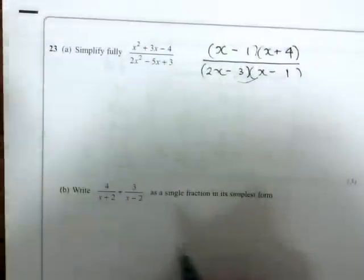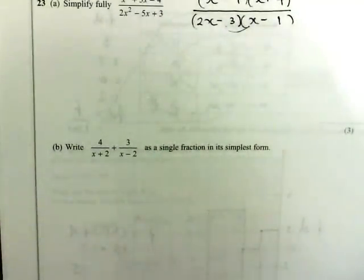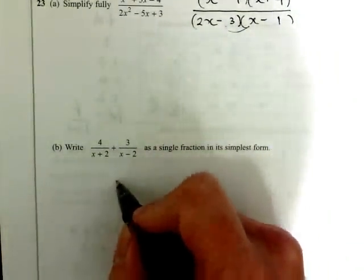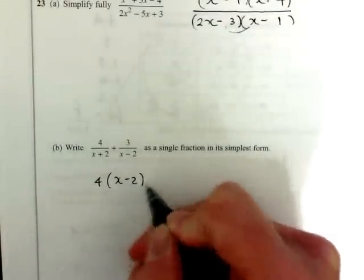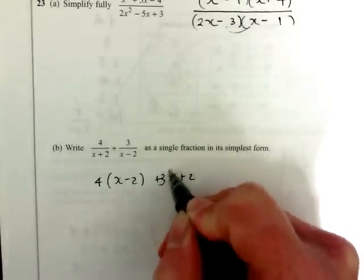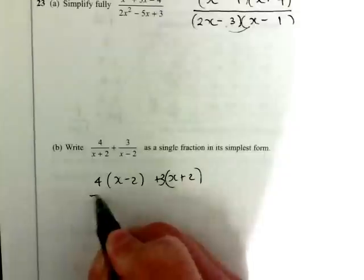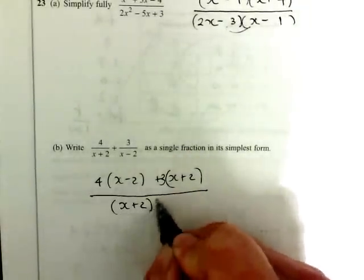So on to the second part. So we've got to express this as a single fraction in its simplest form. So we need to use cross multiplication techniques here, so we're going to have 4 times x minus 2 plus x plus 2 times 3, put the 3 first really, times x plus 2 times x minus 2.